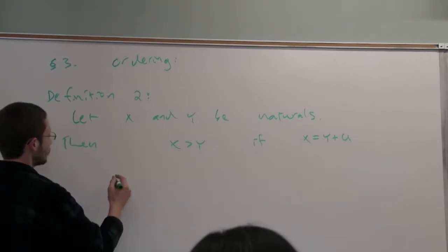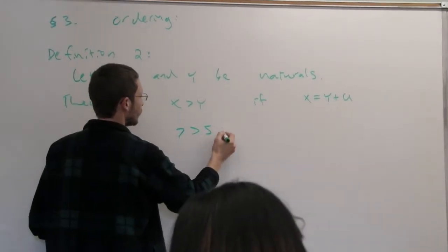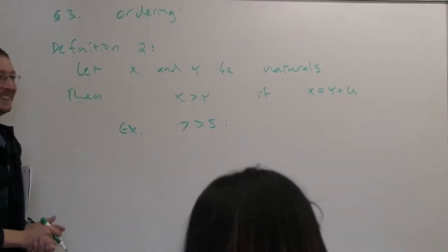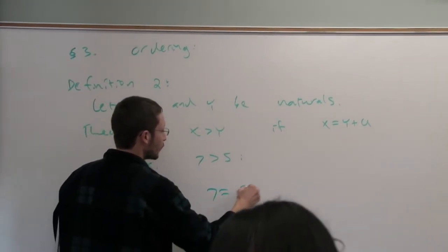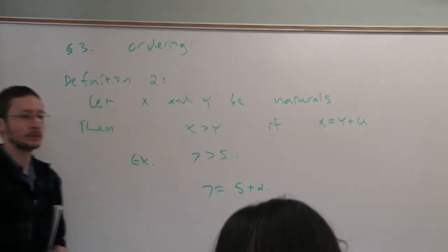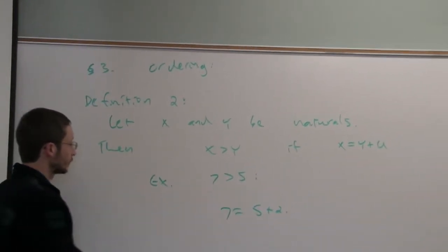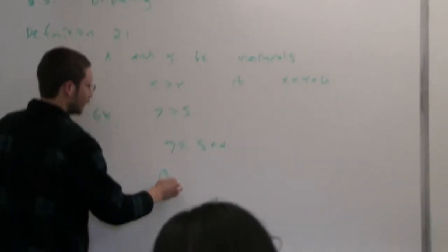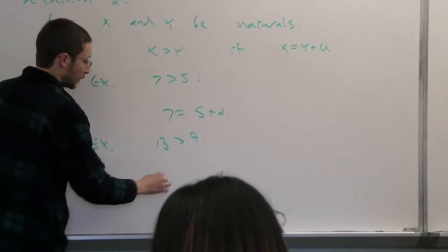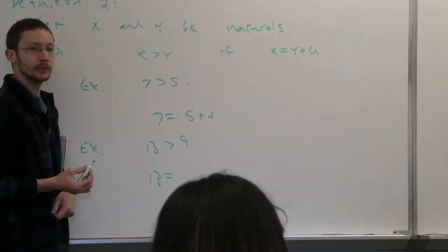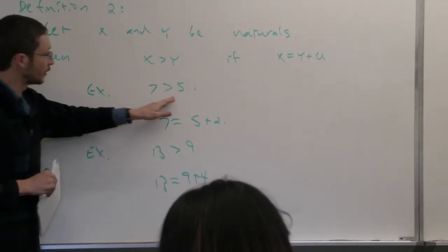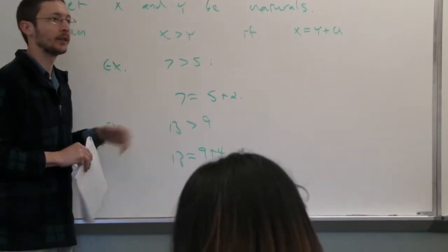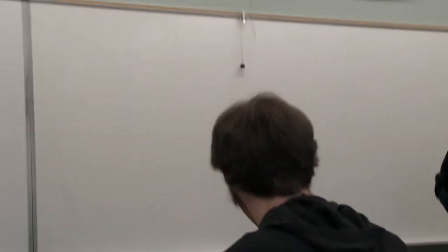Let's do some examples. Seven is greater than five — why? Because seven equals five plus a little bit more. Thirteen is greater than nine because thirteen equals nine plus four. That's what it means to be greater than: seven is greater than five whenever you have to add something to five to get to seven.